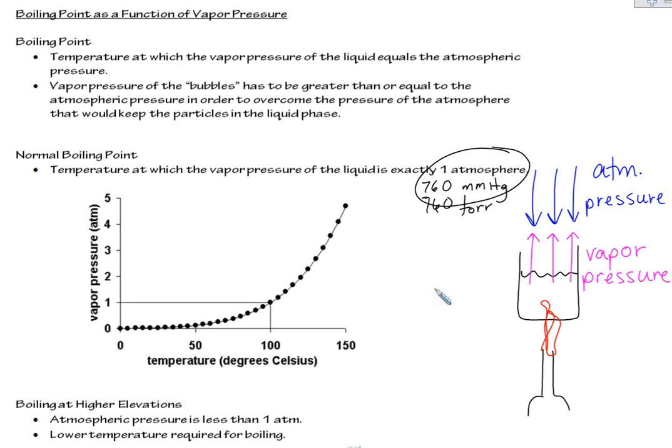Sometimes you can get this off a graph. So here is liquid—this happens to be water. As I increase the temperature, I increase the vapor pressure. If they gave you a graph and asked for the normal boiling point, I would look for one atmosphere or 760 torr. So here's my one atmosphere, and I can follow that across—boom, here's my boiling point, 100 degrees.